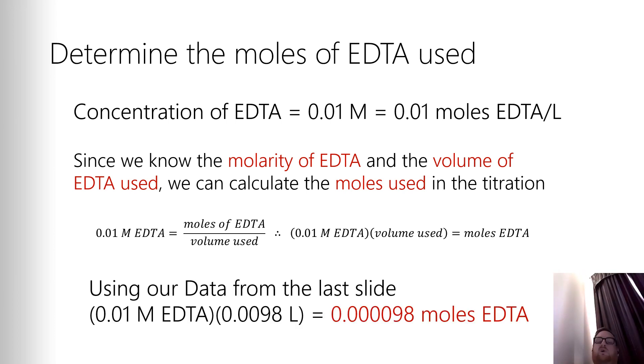So if we apply this to the data we got in the last slide, we take 0.01 molar EDTA times, now here, this is a common mistake, note, I had to convert my milliliters into liters. So 9.8 milliliters, divide that by 1,000, you get 0.0098 liters. So 0.01 times 0.0098 liters gives me 0.000098 moles of EDTA. It's a very small amount, but that's how many moles of EDTA I used to neutralize the calcium in my water sample.